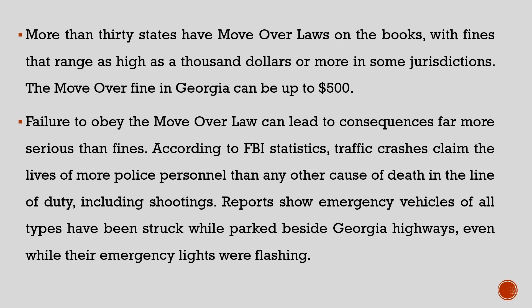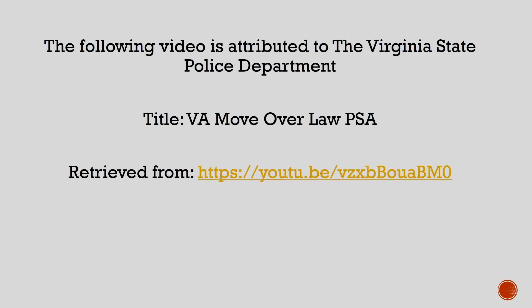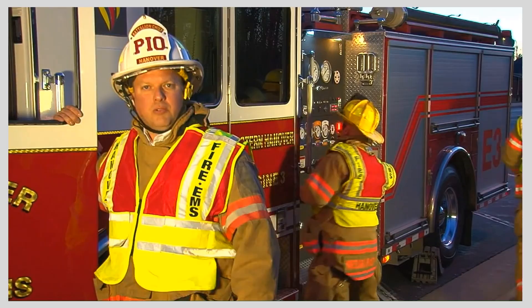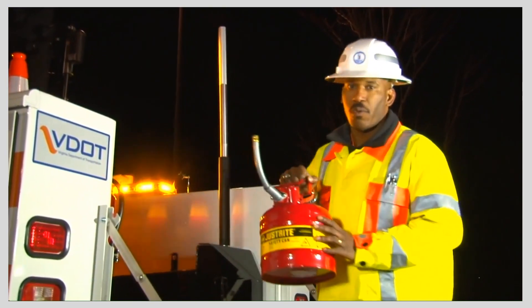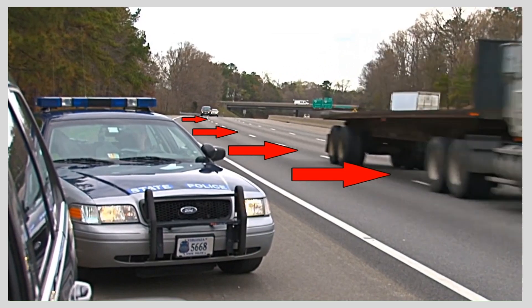According to FBI statistics, traffic crashes claim more lives of police personnel than any other cause of death in the line of duty, including shootings. Reports show emergency vehicles of all types have been struck while parked beside Georgia highways even while their emergency lights were flashing. Whether emergency lights are flashing red, blue, or yellow — when assisting on the road or trying to save your life on the side of it — protect emergency workers and give them room. Move over or slow down.